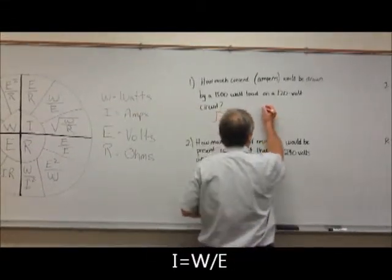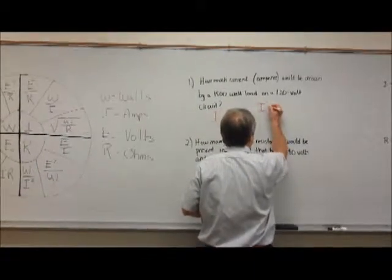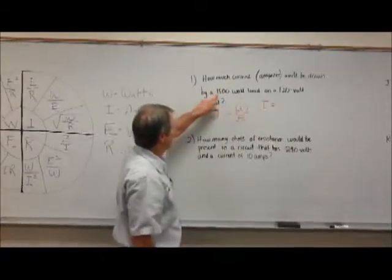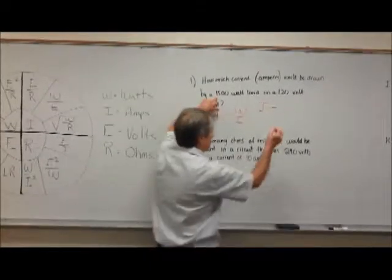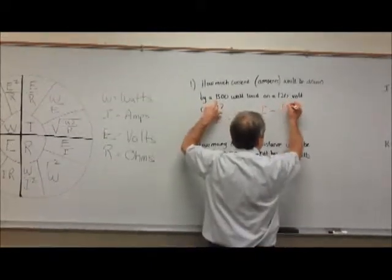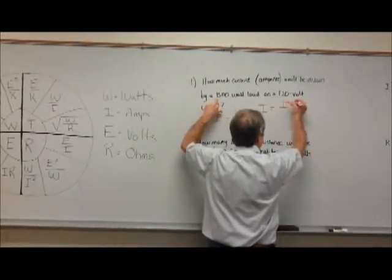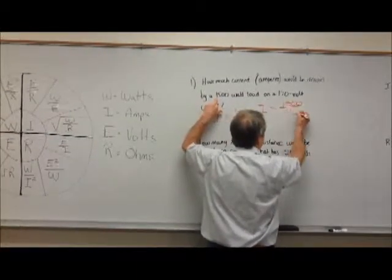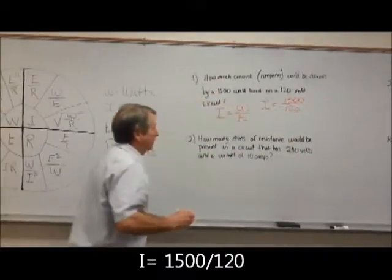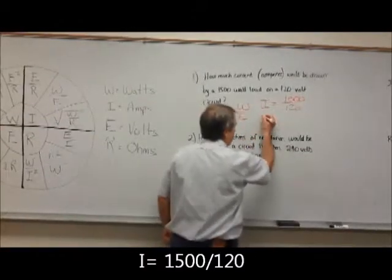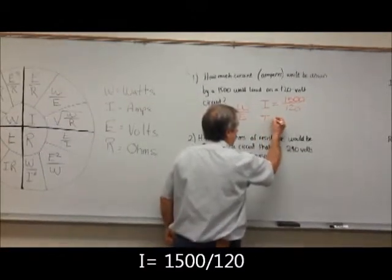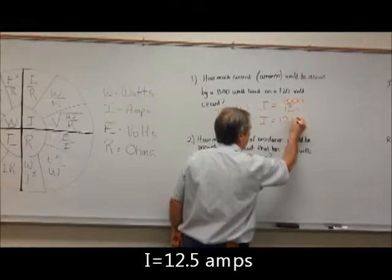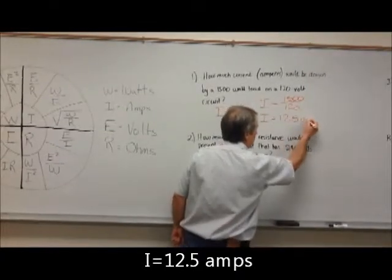Our next step is going to be I is equal to 1500 watts divided by 120 volts. So I is going to be equal to 12.5 amps.